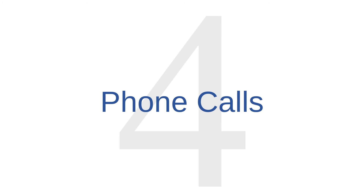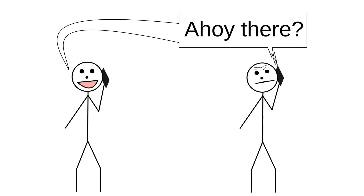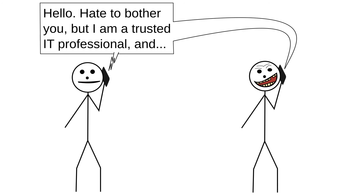We've already seen the example of the malicious USB drives left outside at the bank. Social engineers will also use phone calls to trick people into accepting malware onto their computers. In one common tactic, an attacker will call a target claiming to be a representative of a popular software company or an IT professional from the victim's work, school, or internet service provider.